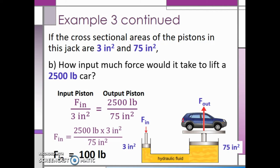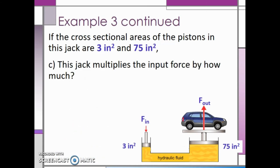The last part of this question asks us to figure out how much this jack multiplies the input force. We are essentially finding the mechanical advantage of the jack, which we discussed in Unit 5 on simple machines. Remember, mechanical advantage is equal to the area out divided by the area in, or you could use the force out divided by the force in.